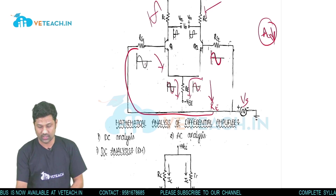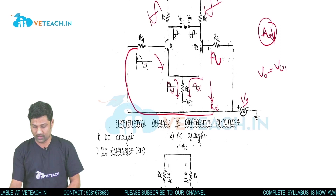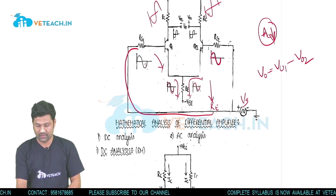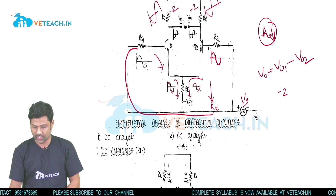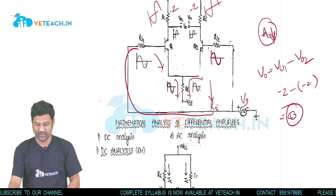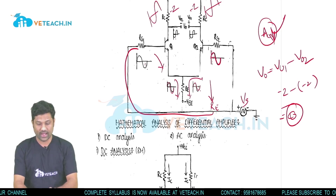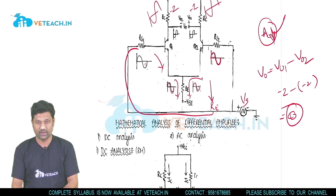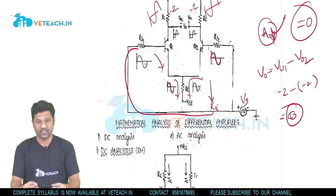The output Vout equals Vout1 minus Vout2. Since both transistors receive the same input, both collectors produce the same output — for example, both give minus 2. So Vout = (-2) minus (-2) = 0 volts. In common mode operation, there is a signal flowing through RE which decreases Ac, and there is no output from the differential amplifier.